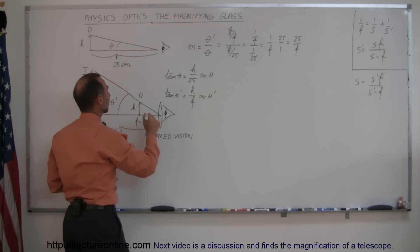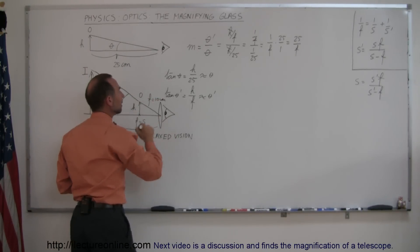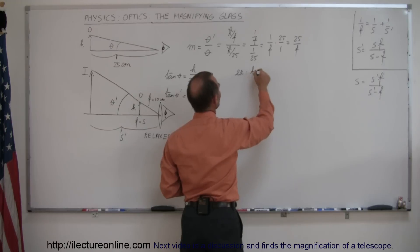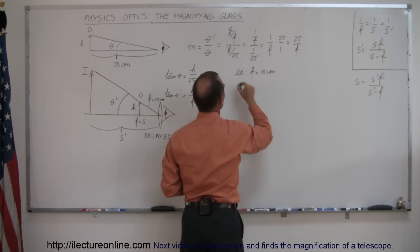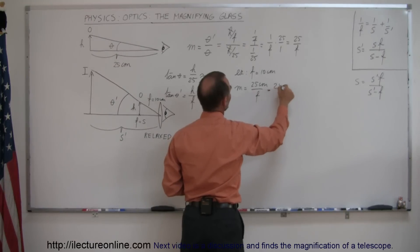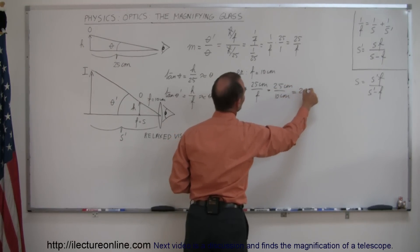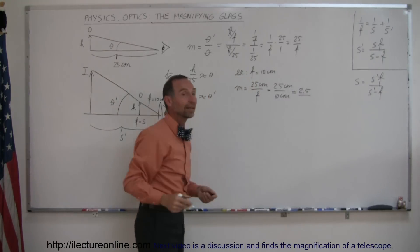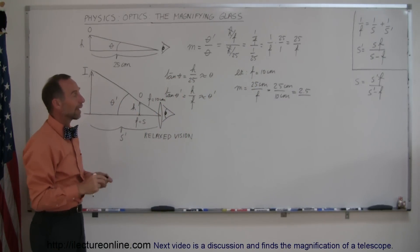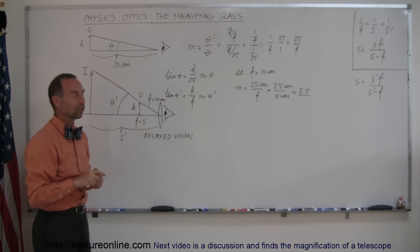In the case of this lens, let's say the focal length equals 10 centimeters. The magnification is equal to 25 centimeters over f, which is equal to 25 centimeters divided by 10 centimeters, which is equal to 2.5. So with a magnifying glass that has a focal length of 10 centimeters, you have a magnification of 2.5 if you look through the lens with relaxed vision.